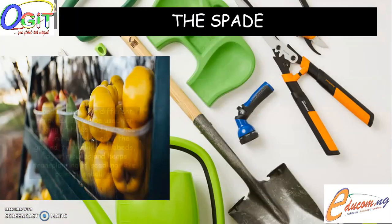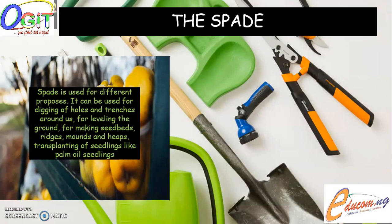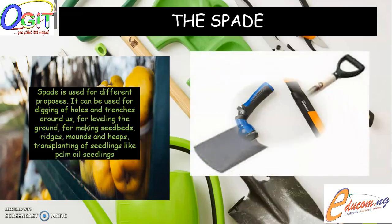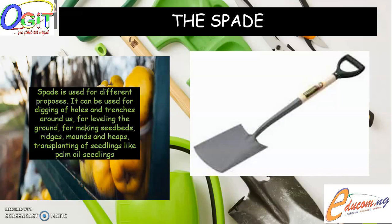Now on the spade. The spade is used for different purposes. It can be used for digging holes and trenches, for leveling the ground, for making seedbeds, ridges, mounds, and heaps, and for transplanting seedlings like palm oil seedlings and other seedlings. The spade is made up of a non-rectangular flat blade attached to a fairly long cylindrical handle that widens at the posterior end to form a triangular block with a D-shaped hole for the hand when used.